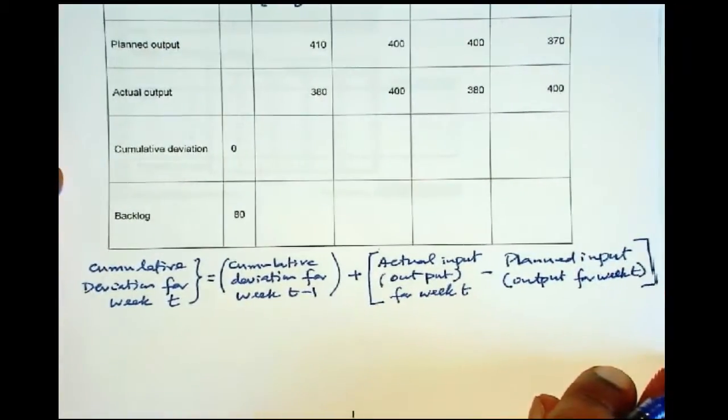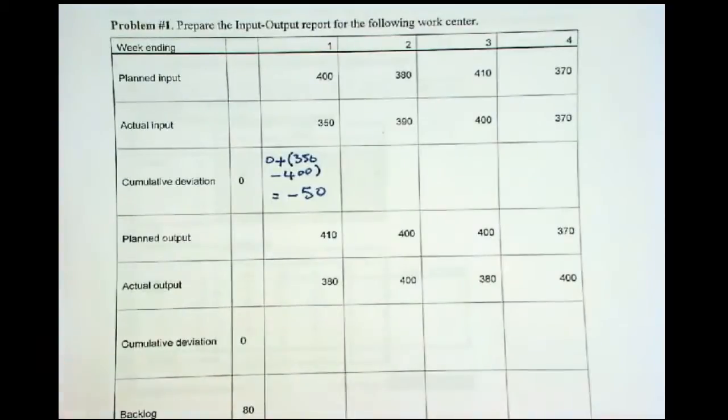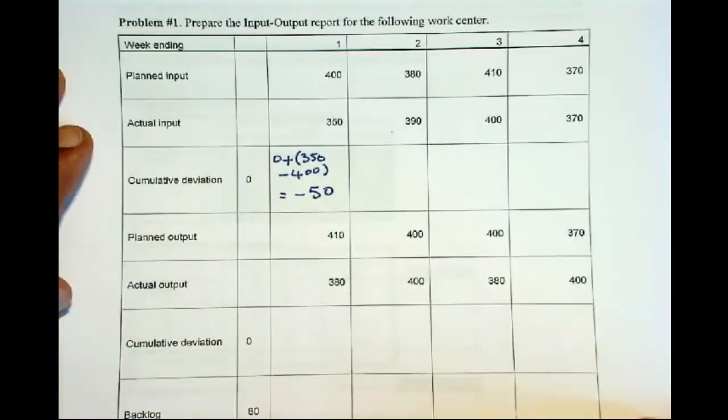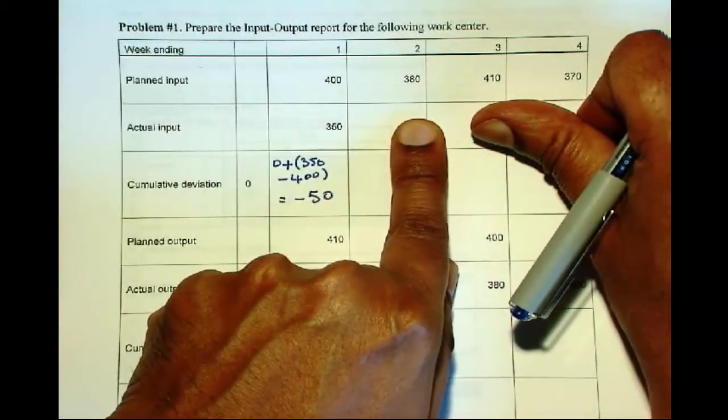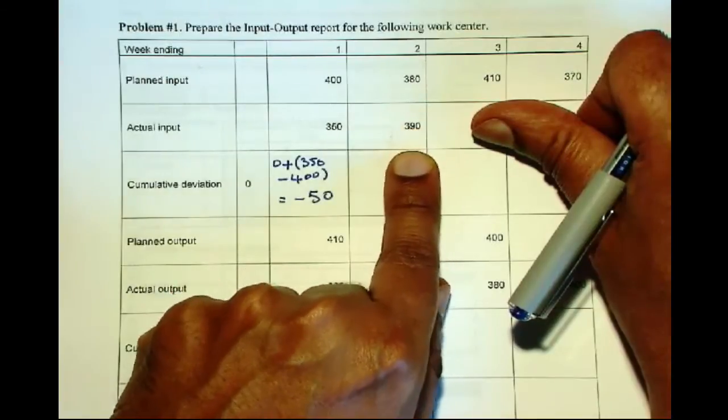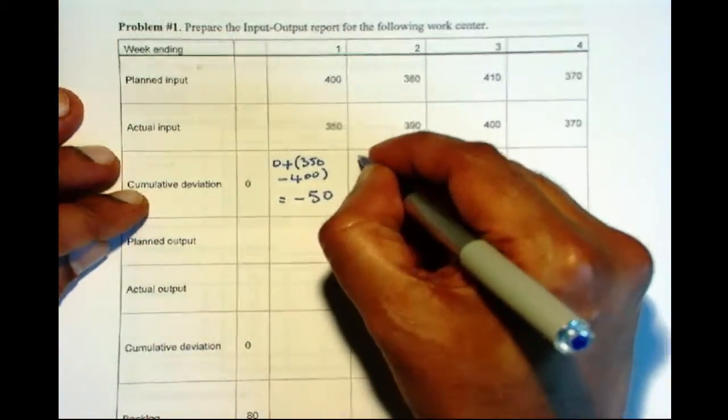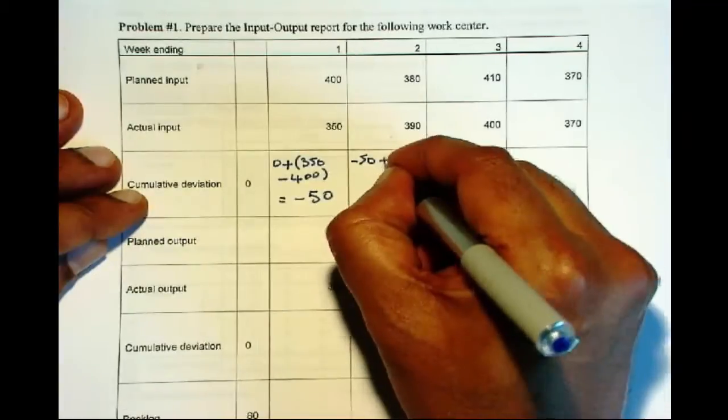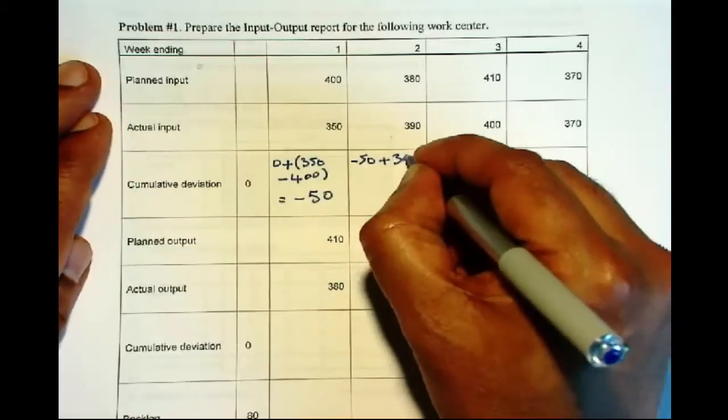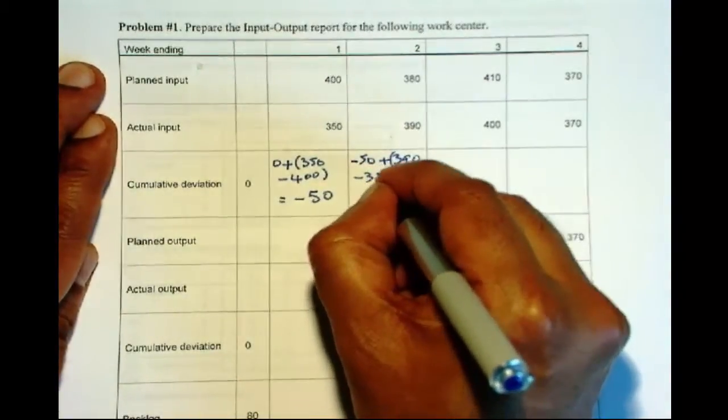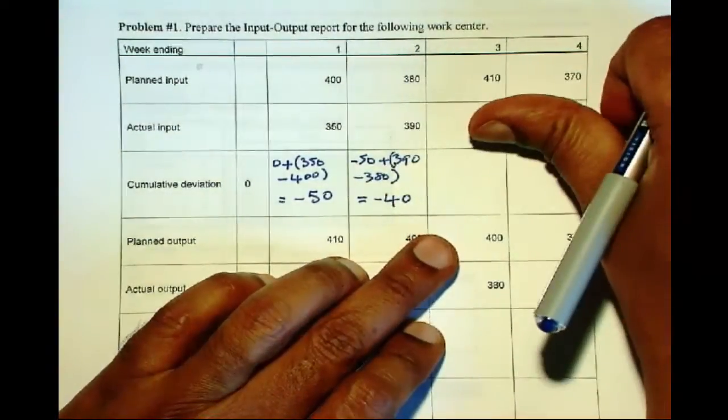So this will give us the cumulative deviation as we go through one week at a time. So continuing to week 2, at the beginning we have 380 planned for week 2. At the end of the week, we have 390 as the actual input. So the cumulative deviation is minus 50, plus 390, minus 380. This gives us minus 40. So we continue in the same way for week 3.